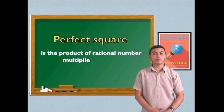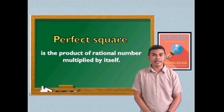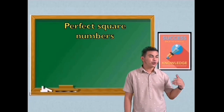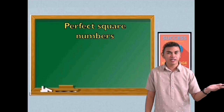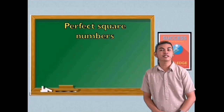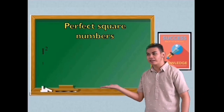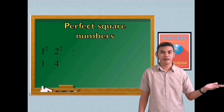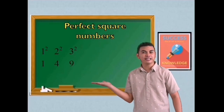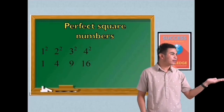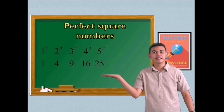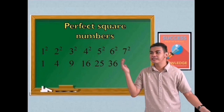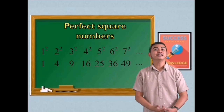What is a perfect square? A perfect square is the product of a rational number multiplied by itself. Let's talk about perfect square numbers. When you multiply a counting number by itself, the result will be perfect square numbers. 1 squared is 1. 2 squared is 4. 3 squared is 9. 4 squared is 16. 5 squared is 25. 6 squared is 36. 7 squared is 49. And so on.